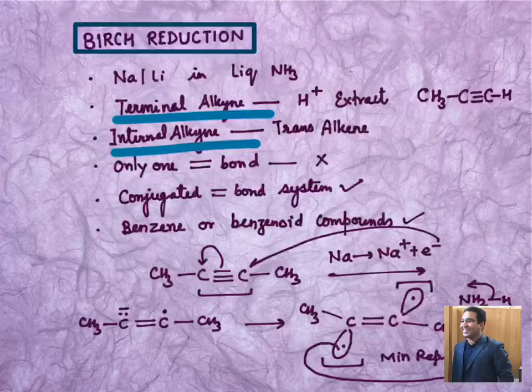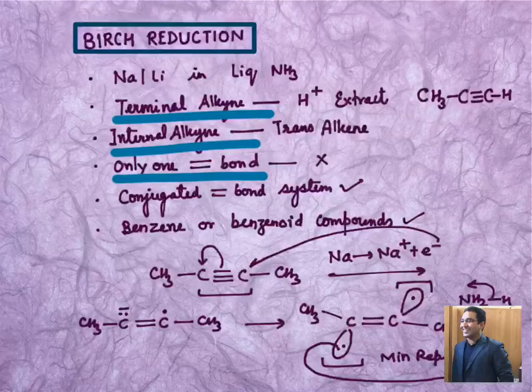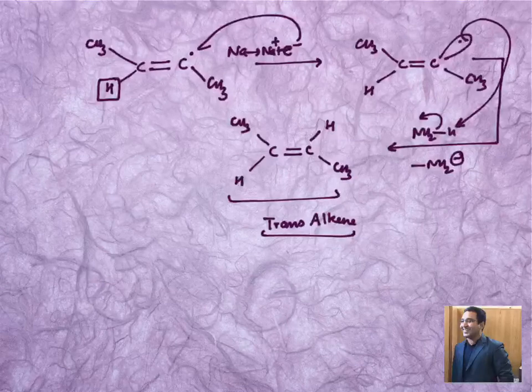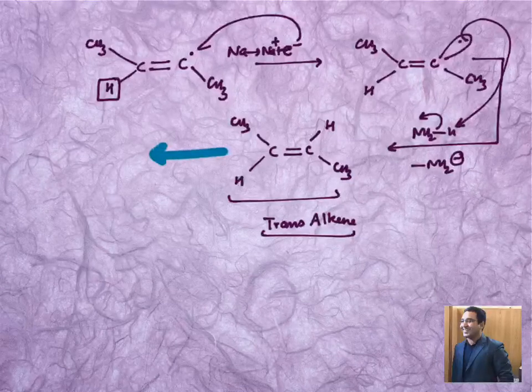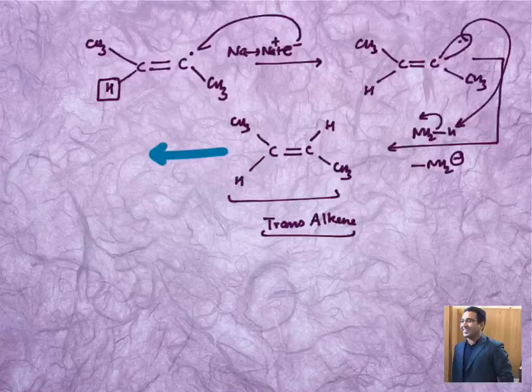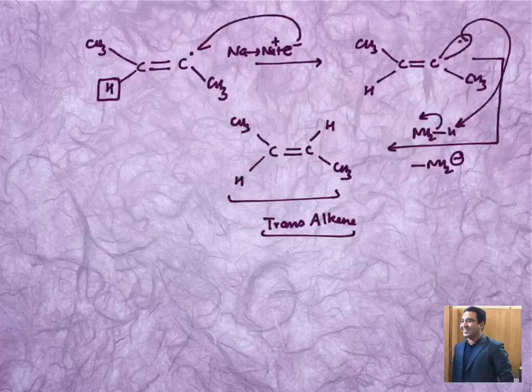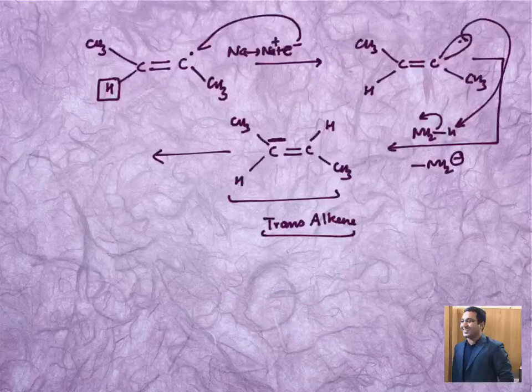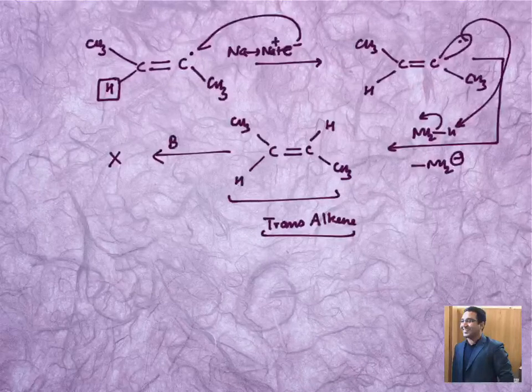Now let us check the next case, only one double bond. So in case of only one double bond, let's say this is given, now you try to do the reaction. So in this sequence, we cannot get any further reaction because you can't create again negative charge at this place. Negative at this place will be highly unstable. So no further reaction through Birch reduction.